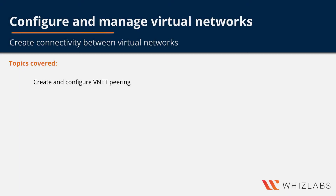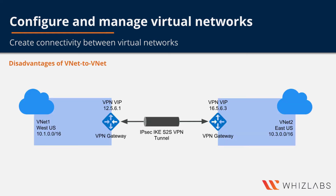Welcome to the next objective: creating and configuring VNet Peering. In the last video, we saw an example of VNet-to-VNet connectivity, where we had two different virtual networks, deployed a virtual private network gateway in each, and connected the two gateways. The disadvantage of VNet-to-VNet connectivity is that you need to create a gateway deployed within a gateway subnet inside your virtual network.